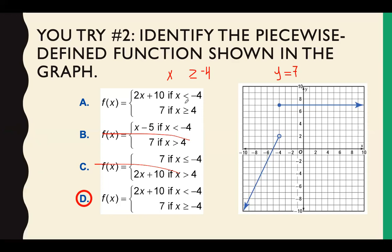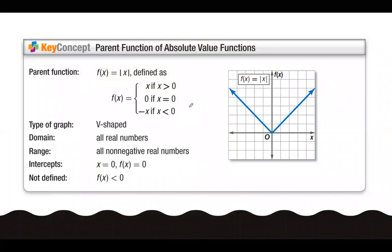It does help that they give us that part if x is less than negative 4. So we're going to go with D. On A, they're missing the negative right here is what it is.